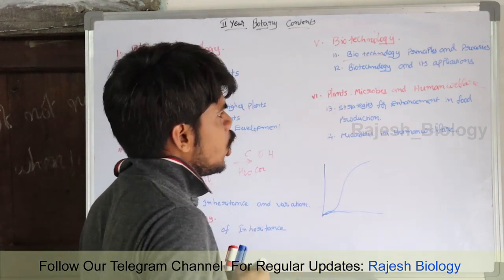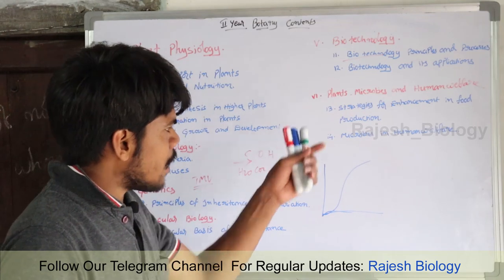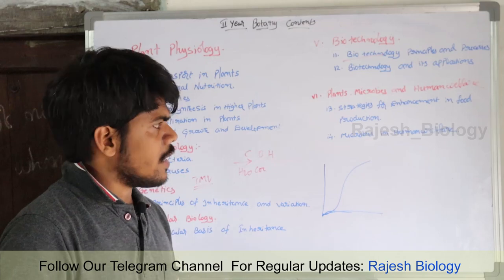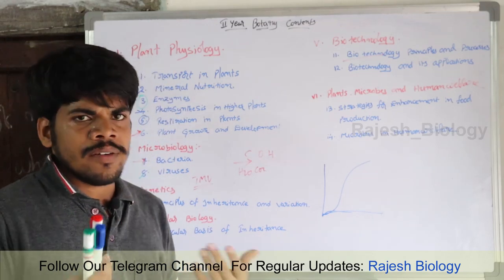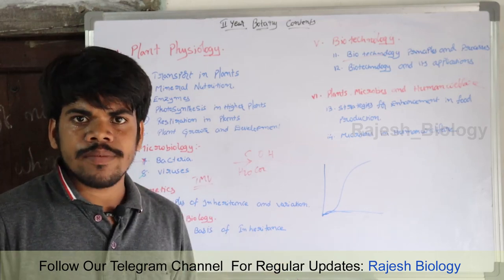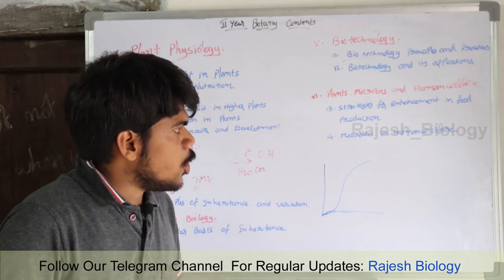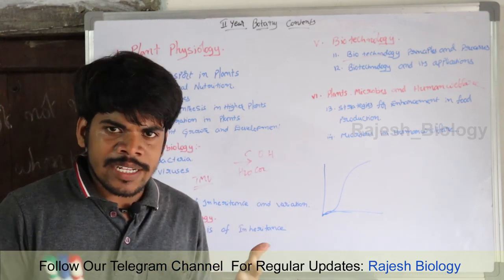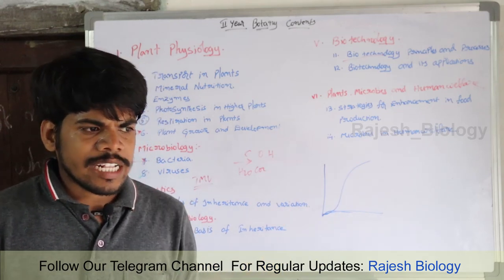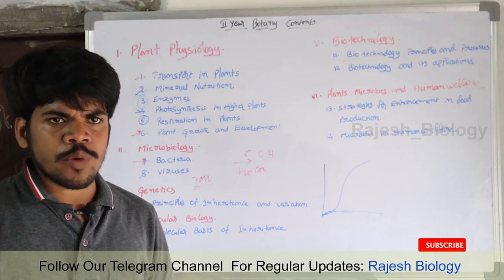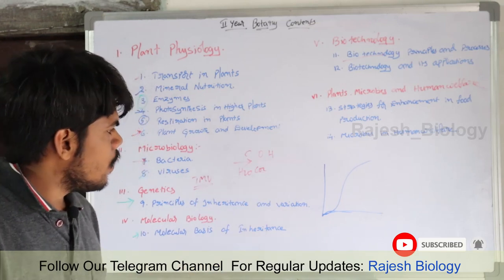Next is plants, microbes, and human welfare. Strategies for food enhancement from plants include creating food hybrids of different types. Microbes in human welfare — for example, E. coli, and beverages are prepared by some bacteria and microbes. Some drinks like alcohol are prepared through the fermentation process done by microbes. Microbes help in human welfare in many ways.